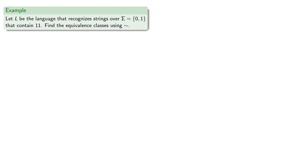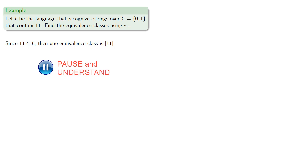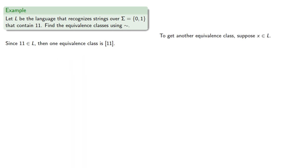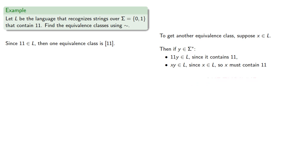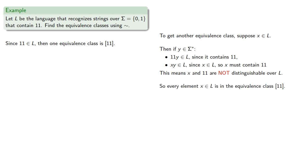Let's go back to the language that recognizes the strings over symbols 0 and 1 that contain 11. Let's find the equivalence classes using squiggle. Since the string 11 is in L, one equivalence class is generated by 11. To get another equivalence class, suppose x is in L. Then if y is any string, 11y is in L since it contains 11. Meanwhile, xy is also in L since x is in L, which means x must contain 11. This means that x and 11 are not distinguishable over L, so every element of our language is in the equivalence class generated by 11. In other words, the equivalence class of 11 includes all elements of our language.